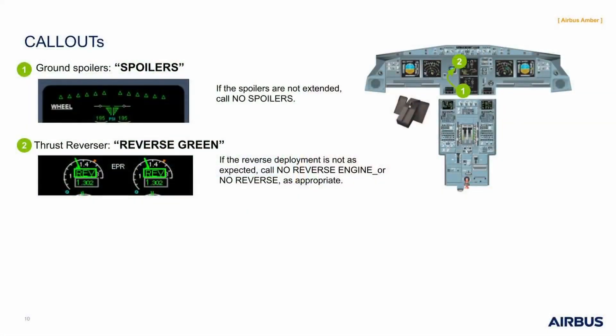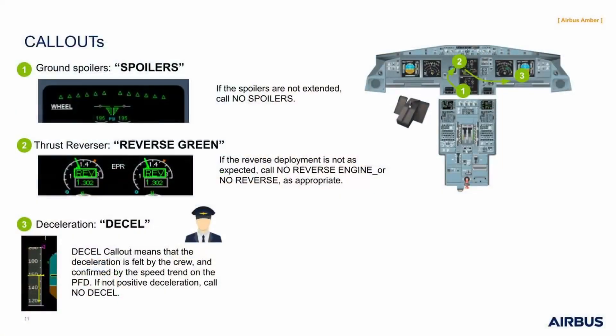The second call-out is related to the reversers deployment: 'reverse green'. If the reverse deployment is not as expected, call 'no reverse engine 1' or 'no reverse engine 2', or 'no reverse' as appropriate. The third call-out, 'decel', is based on the physical flight crew feeling and confirmed by the speed trend on the PFD. If there is no positive deceleration detected, call 'no decel'.